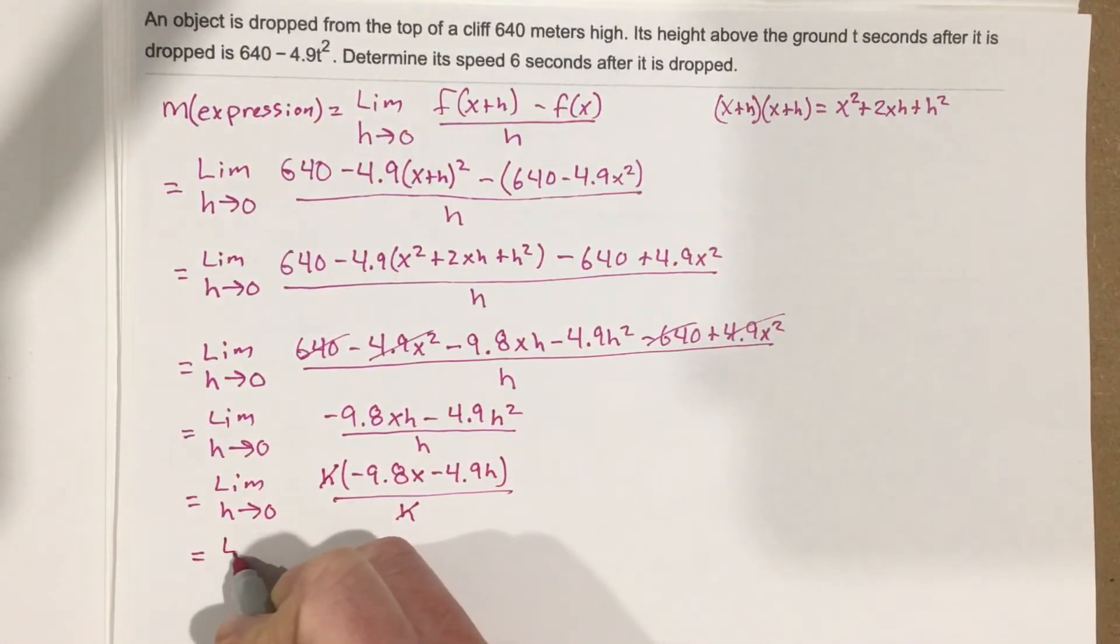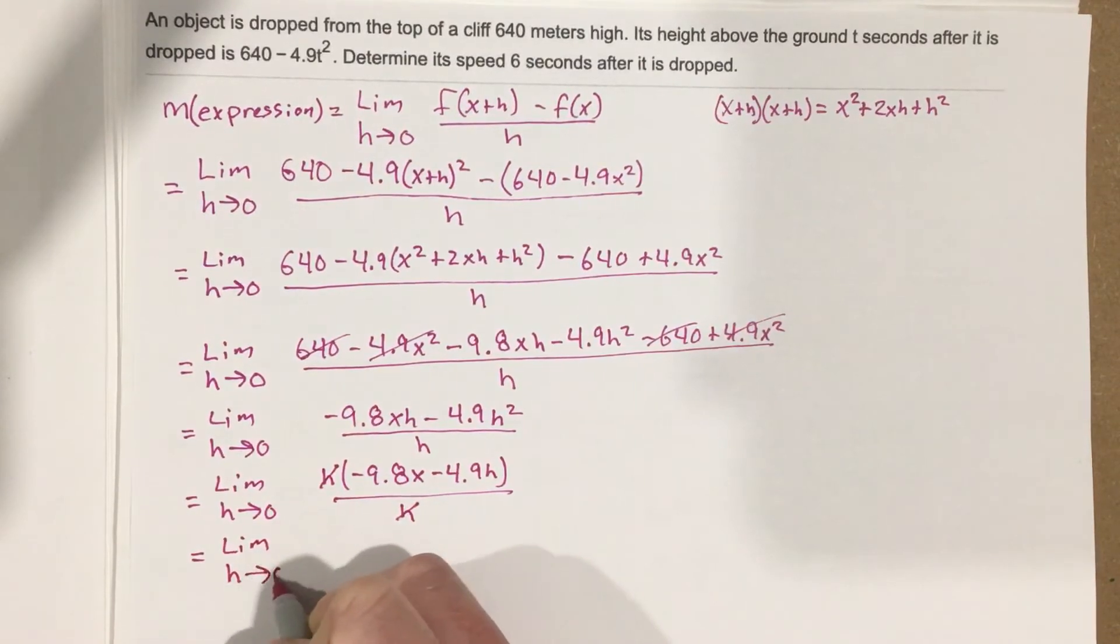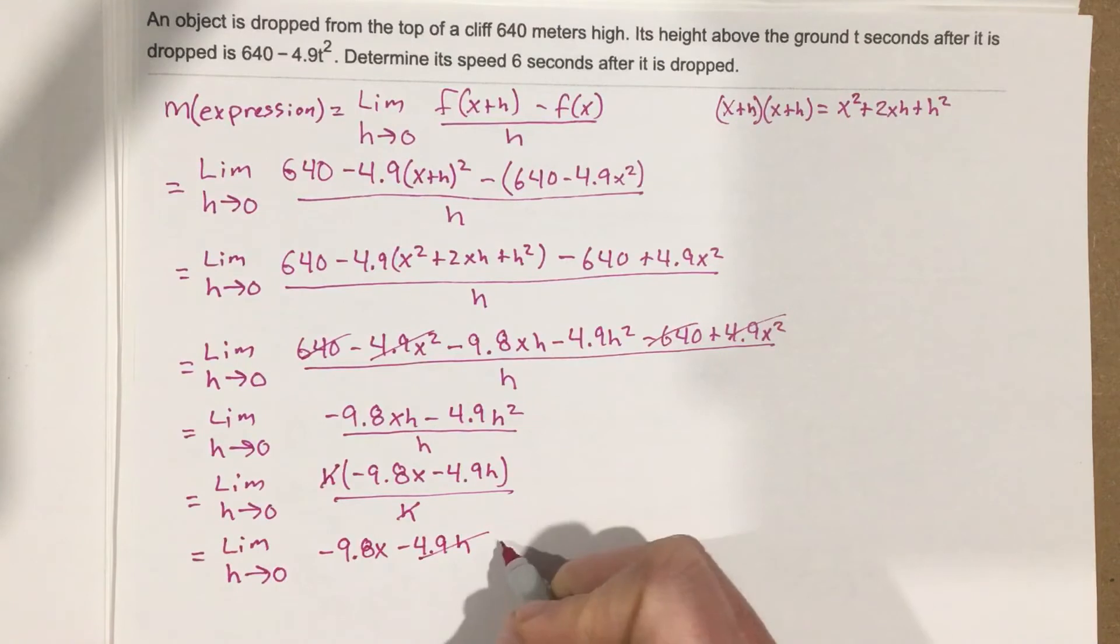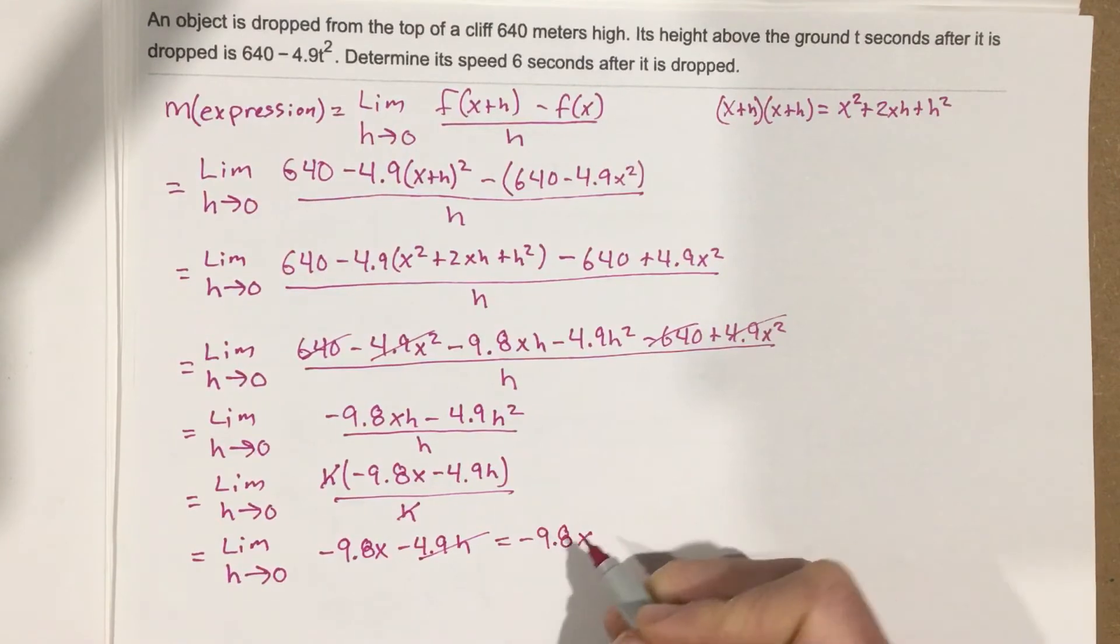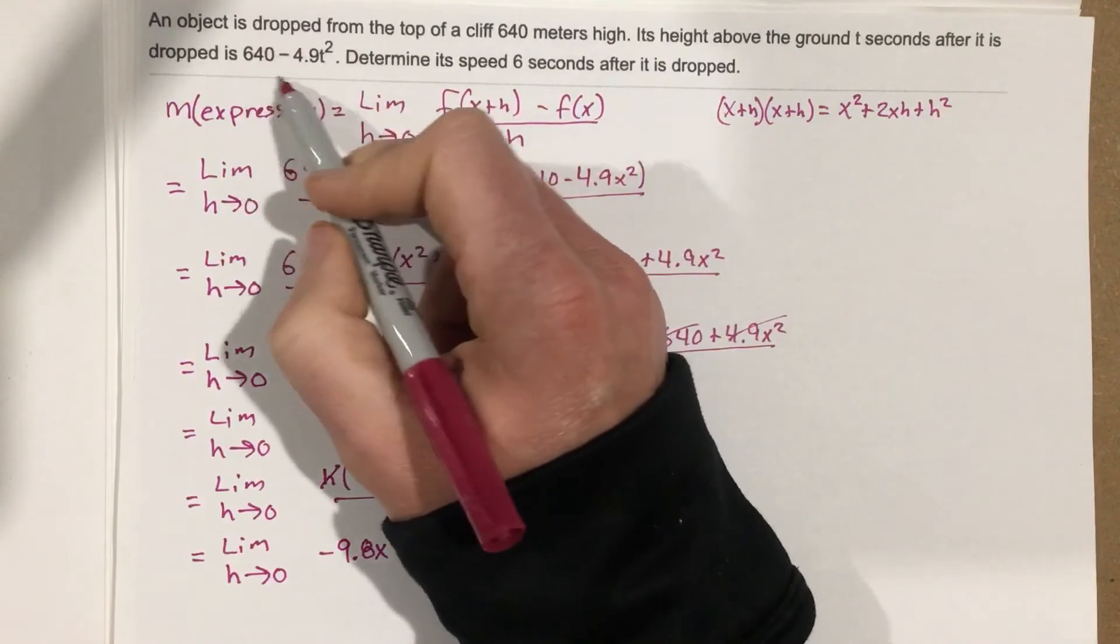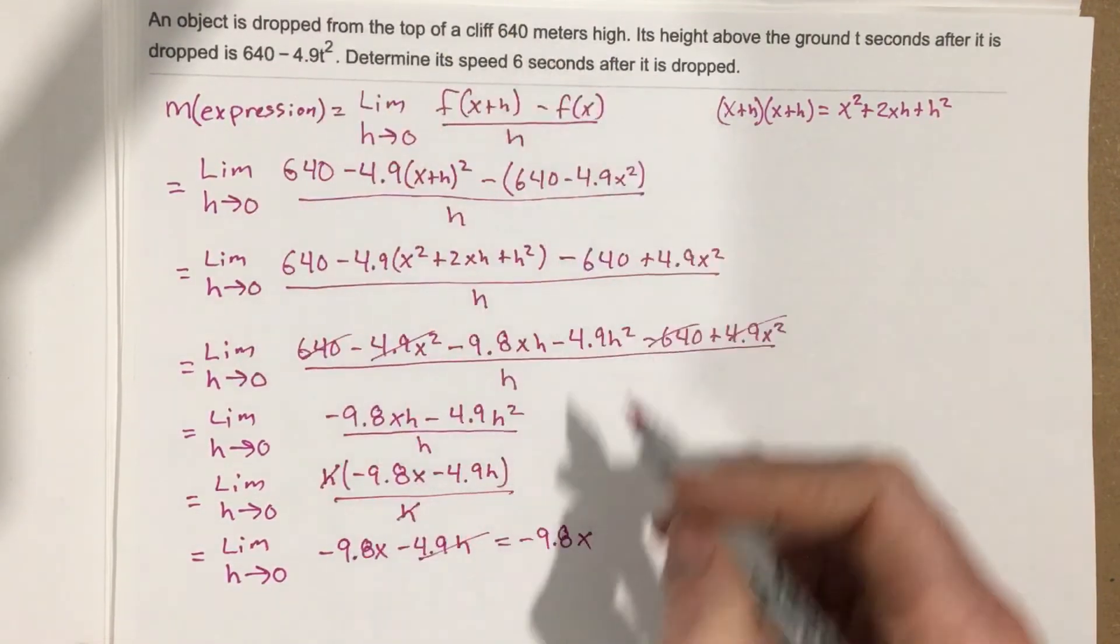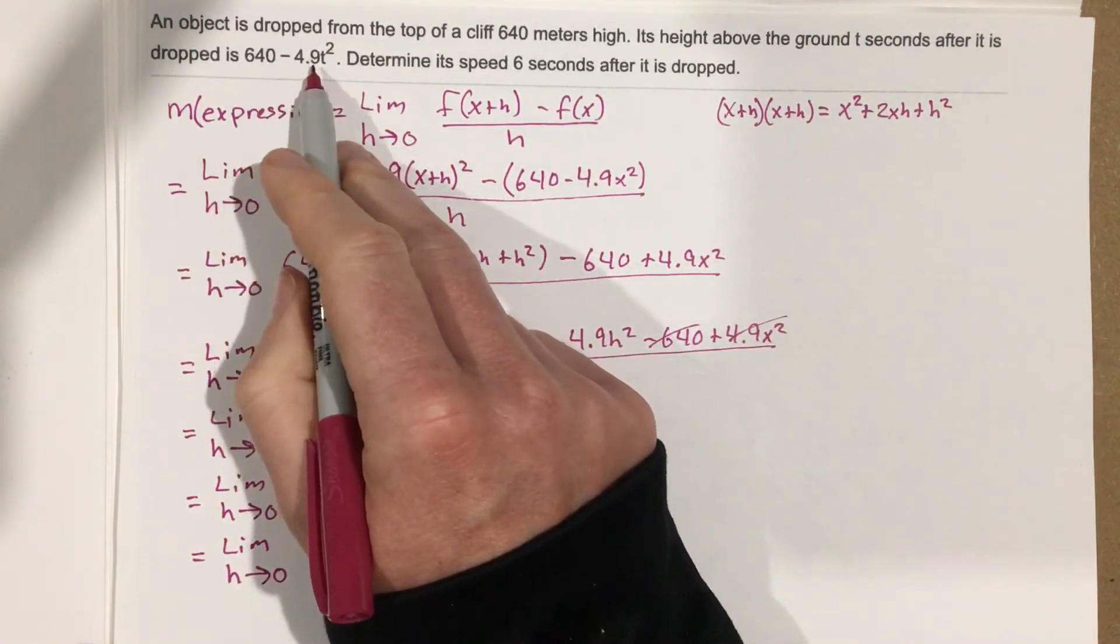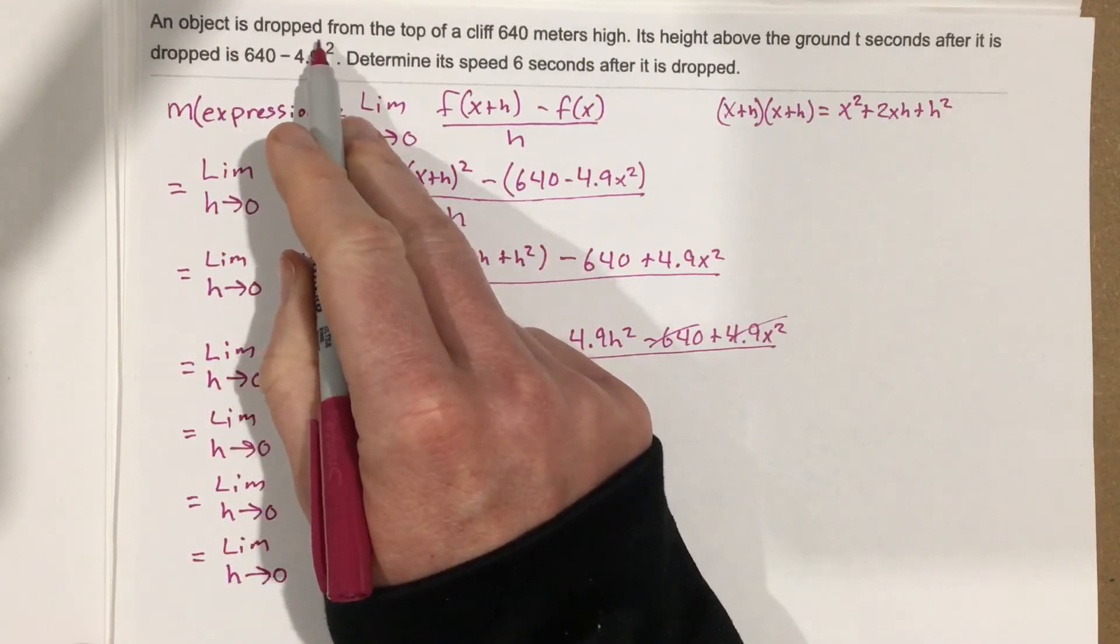I'm left with limit as h approaches zero of negative 9.8x minus 4.9h. Plug in zero. This cancels and that leaves you with negative 9.8x. So this is the expression for the slope for this function right here. Really, this is the expression for the speed at any point in time after this object's dropped.